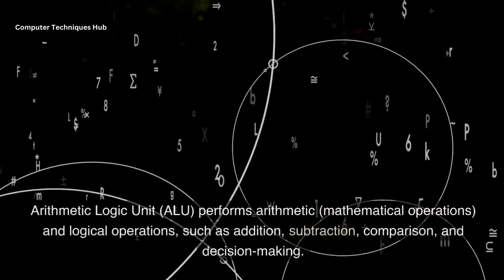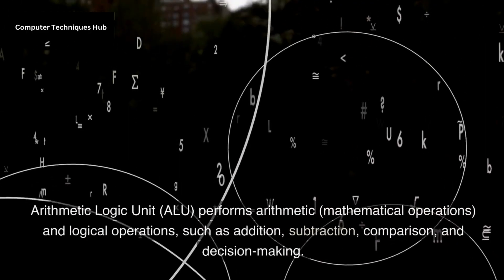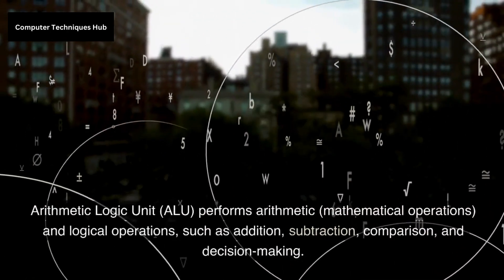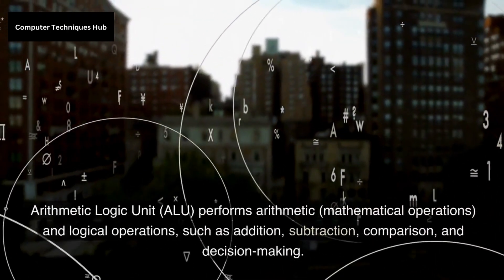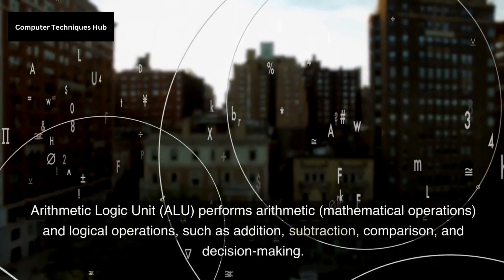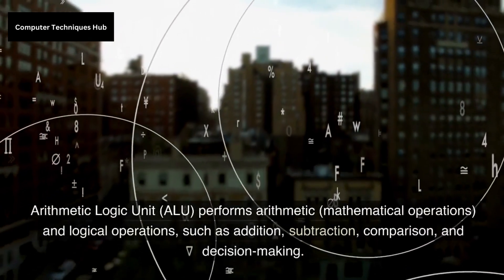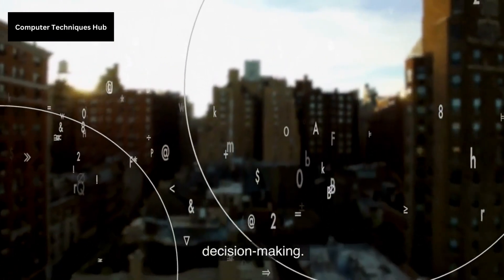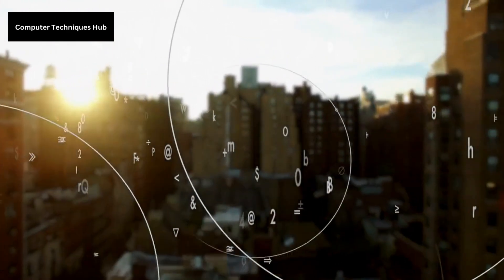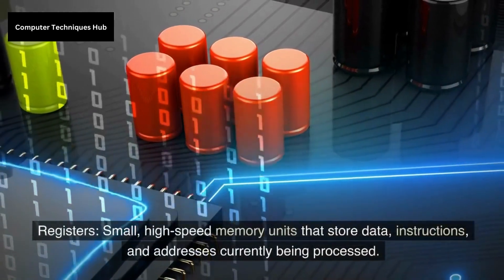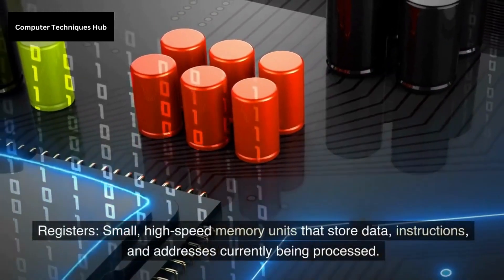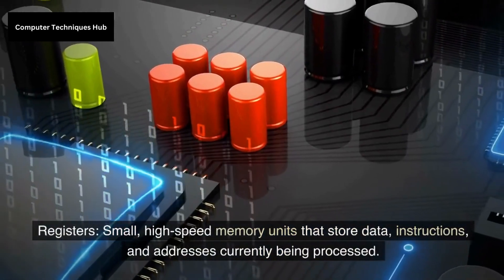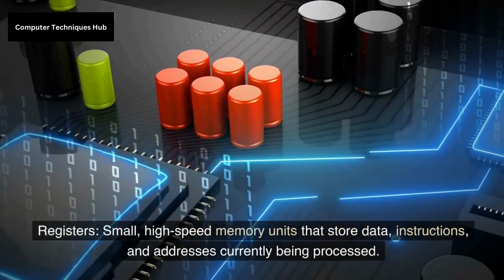The arithmetic logic unit (ALU) performs arithmetic and mathematical operations, and logical operations such as addition, subtraction, comparison, and decision-making. Registers are small, high-speed memory units that store data, instructions, and addresses currently being processed.